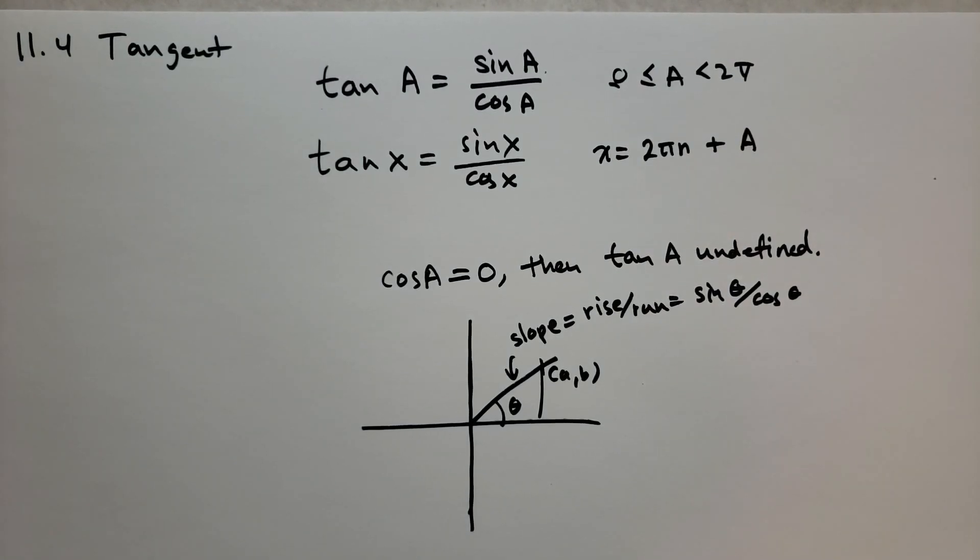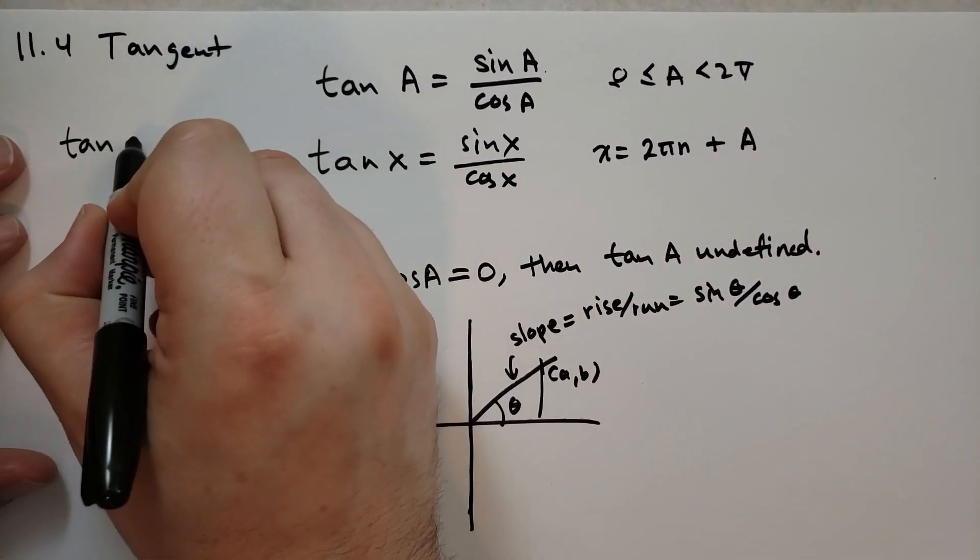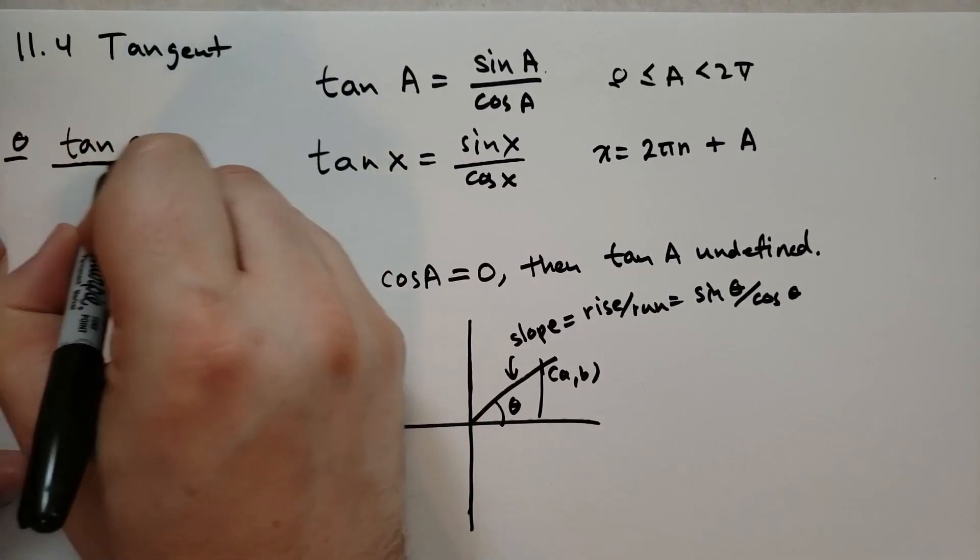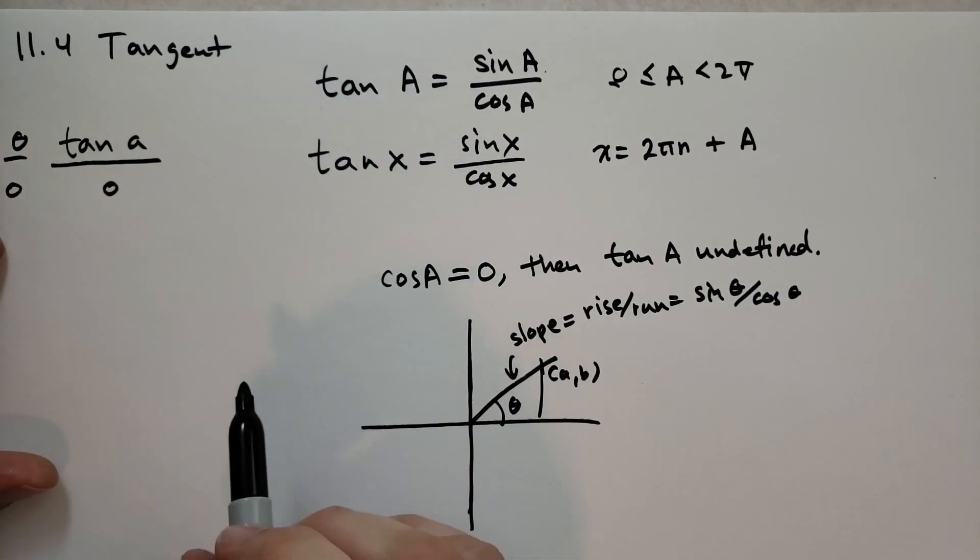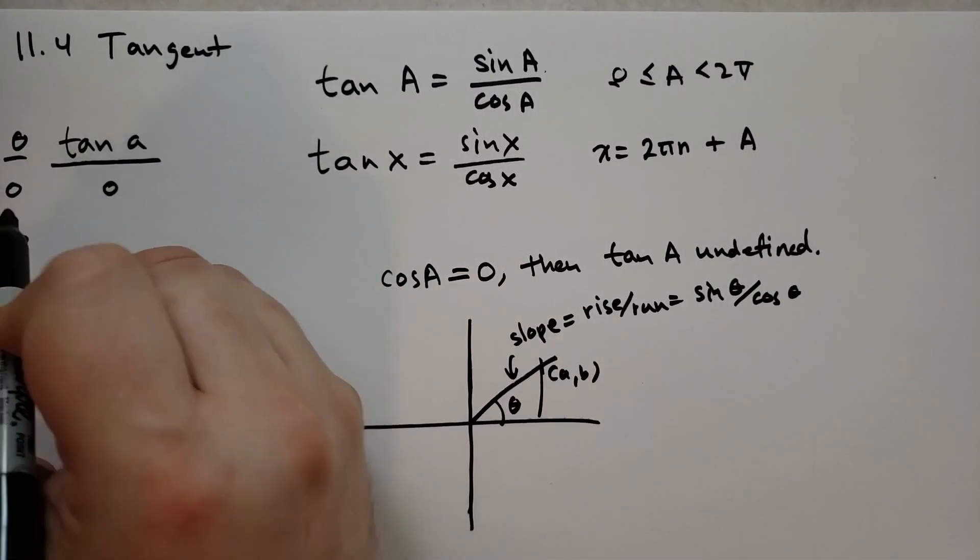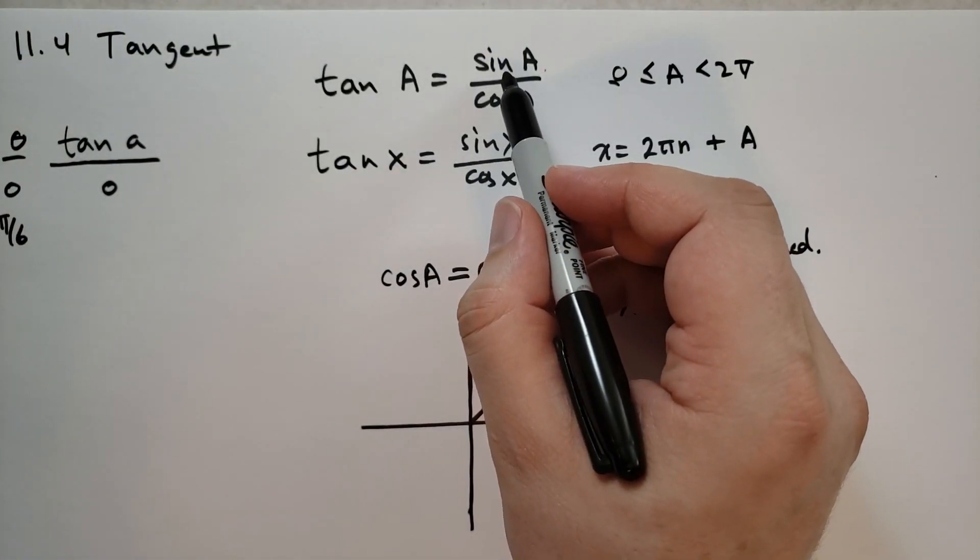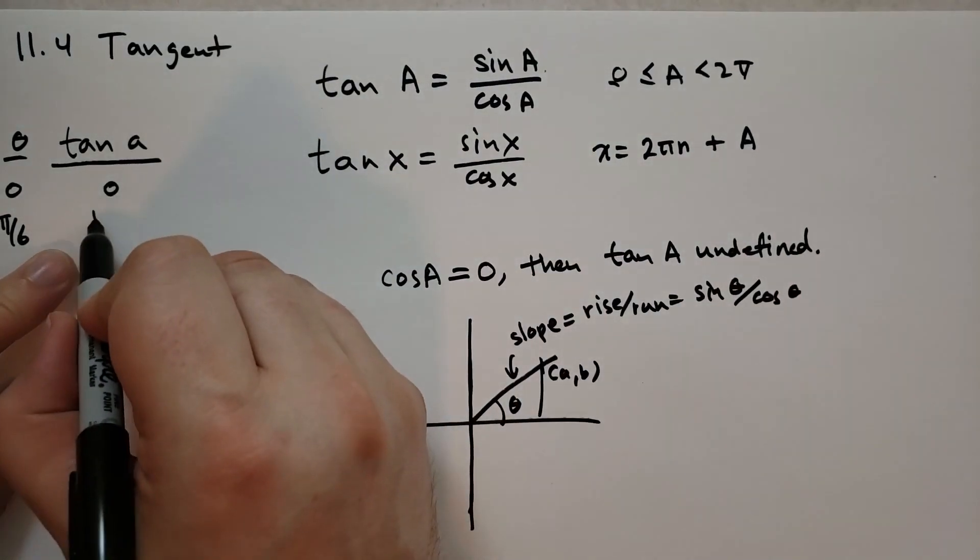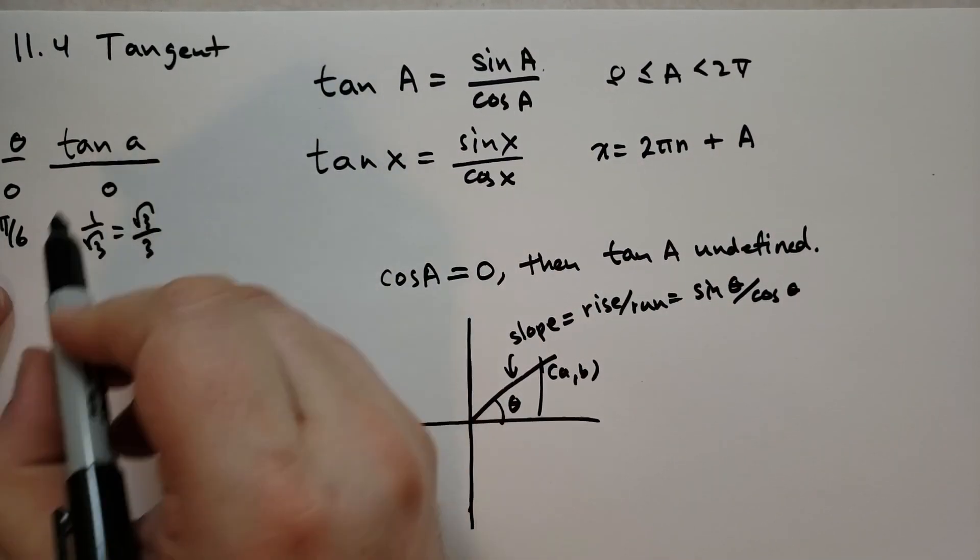There's not really much more to say about tangent. There's probably some interesting angles that we want to think about. So let's write down some angles. When theta is zero, tangent of theta is also zero because sine is zero. And then we have theta of π over 6. Well, in this case, sine would be one-half and cosine would be root of three over two. So we're going to get one over root of three, which we can rewrite as root of three over three.